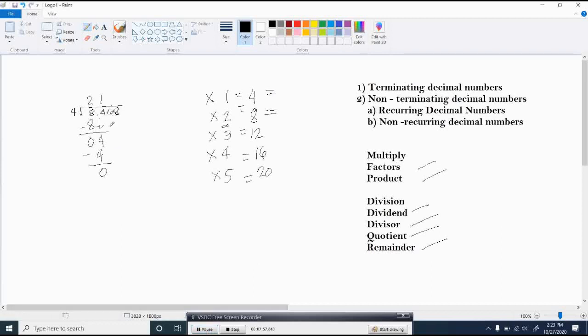Then bring down 6. Look at the multiples of 4. Do we have 6 in table 4? So since we don't have 6 in table 4, find the number that is less than 6. A number that is less than 6 is 4.